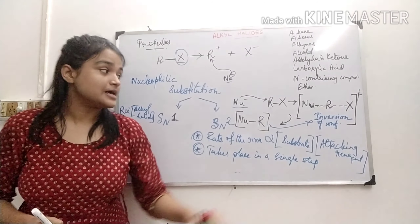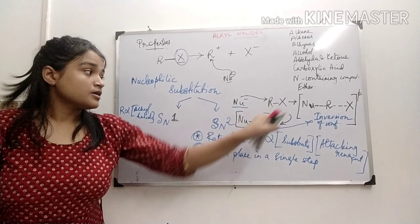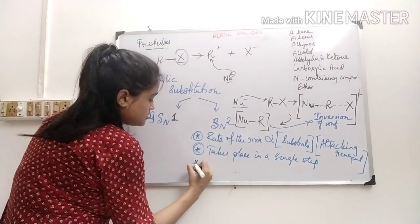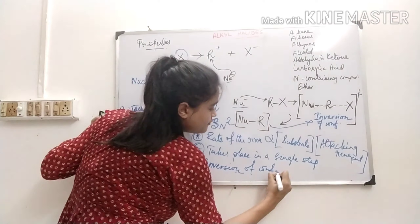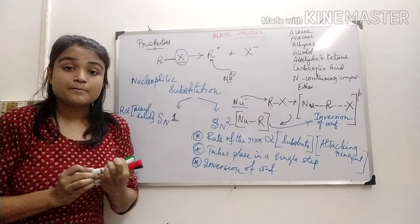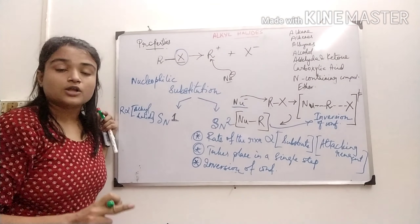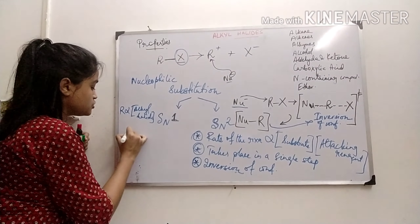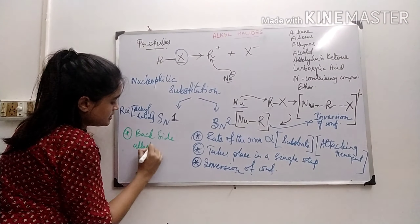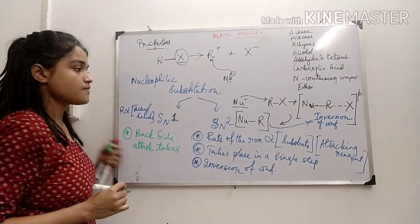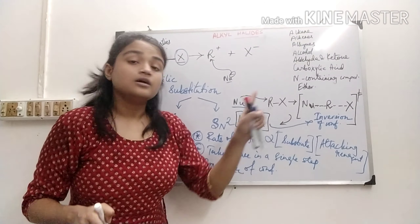In SN2 mechanism, the product formed is inverted in configuration relative to the alkyl halide. This takes place via inversion of configuration. The most important point is that the nucleophile attacks the carbon of the alkyl group from the back side — back side attack takes place.